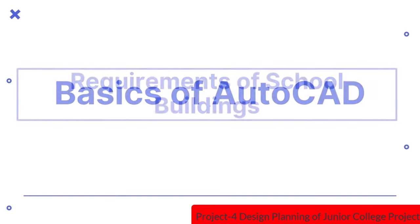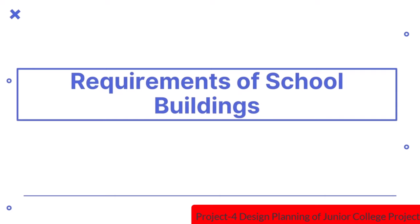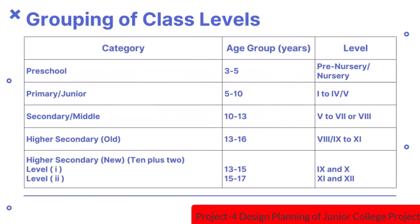Hello everyone! In this video, we will be discussing the requirements of school buildings. First, let us discuss grouping of class levels. As a student moves from nursery to higher levels, the process of imparting education becomes more involved. This demands addition of facilities to the basic classroom unit depending upon the level and nature of the school. For this purpose, the class levels have been grouped into five categories, which take into account the age group and the level of education to be imparted.